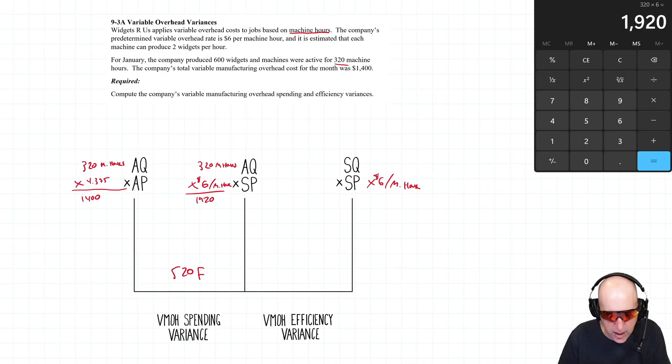How many machine hours should this have taken? We actually made 600 widgets. How many machine hours would we expect it to take? The company's predetermined overhead rate is six dollars per hour and it's estimated that each machine can produce two widgets per hour. So if I make 600 widgets and it can make two widgets per hour, I would expect the machine to be working for 300 machine hours. That is my SQ.